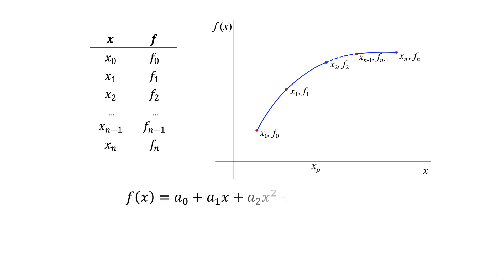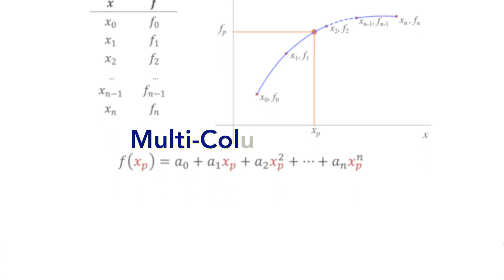If we have a new value on the x coordinate, let's call it xp, the polynomial enables us to find the corresponding f value fp. In this case, the polynomial is a function of one variable x. That's why it's described as one-dimensional.